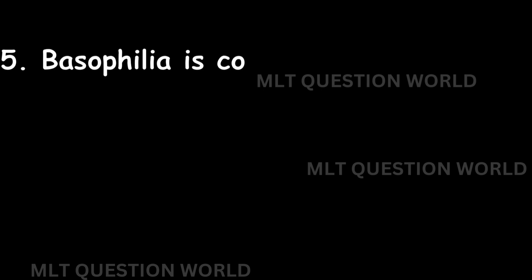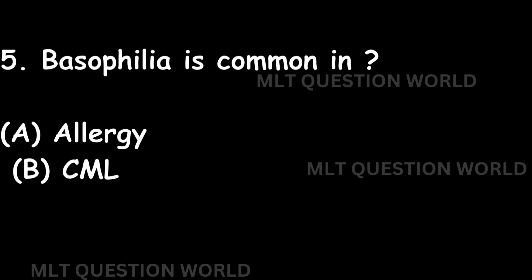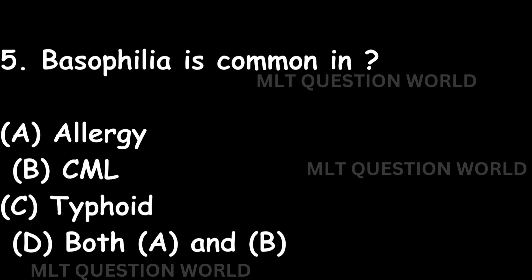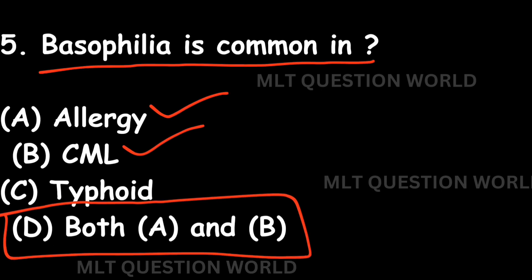Question number five: Basophilia is common in — Option A: Allergy. Option B: CML or Chronic Myeloid Leukemia. Option C: Typhoid. Option D: Both A and B. Basophilia is common in allergy and in Chronic Myeloid Leukemia, so the right answer is Option D: Both A and B — that is, allergy and CML.